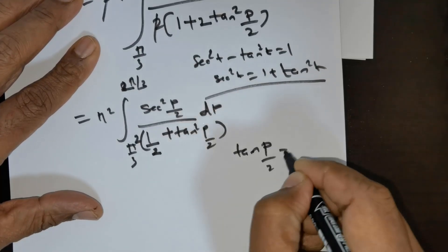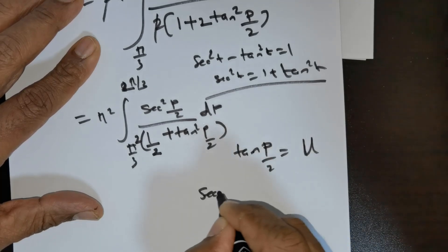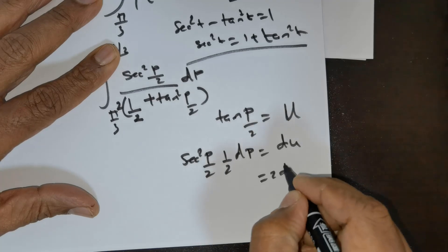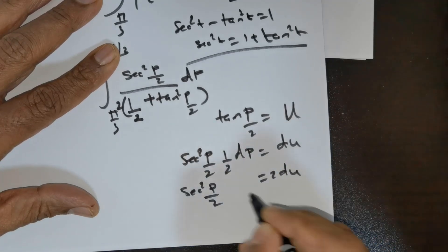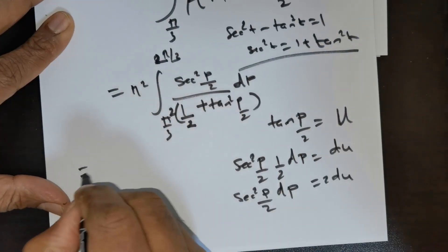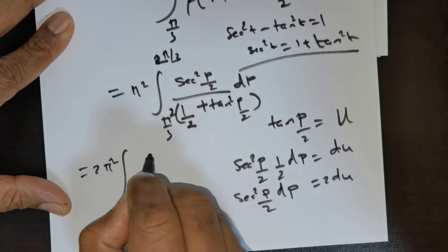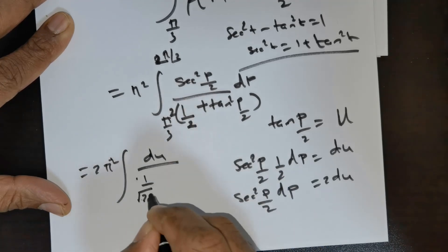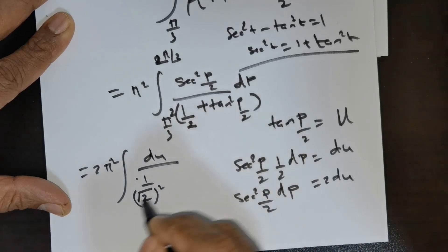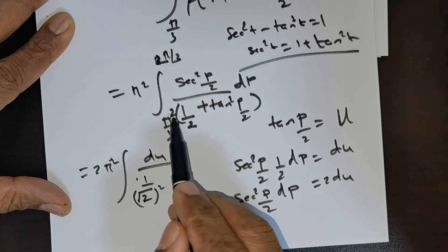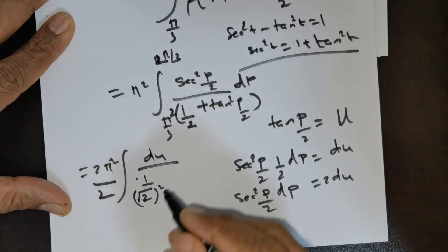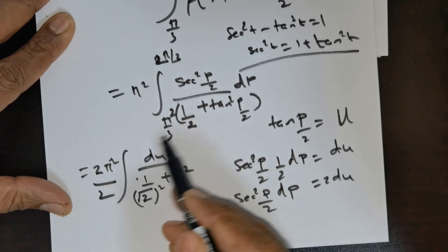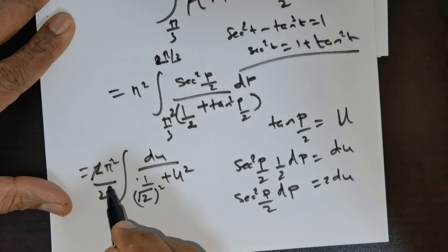Now substitute u = tan(p/2). Differentiating: sec²(p/2) · (1/2) dp = du, so sec²(p/2) dp = 2 du. Substituting, the integral becomes 2π² times the integral of 2 du divided by (1/√2)² + u², rewriting the 2 in the denominator as (√2)². The 2s cancel, leaving π² times the integral from 1/√3 to √3 of du divided by ((1/√2)² + u²).